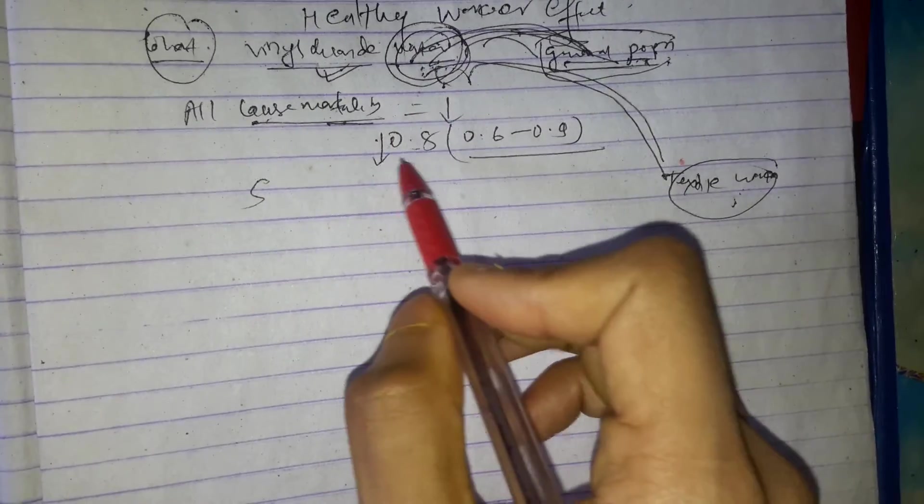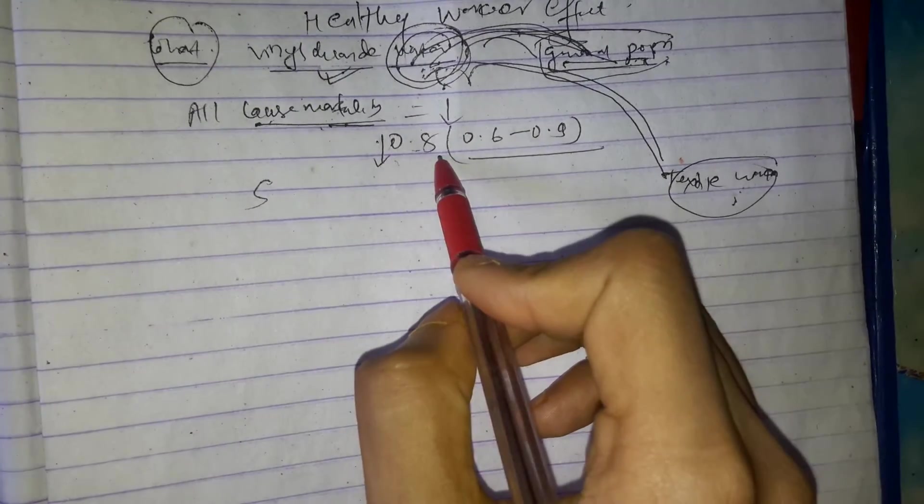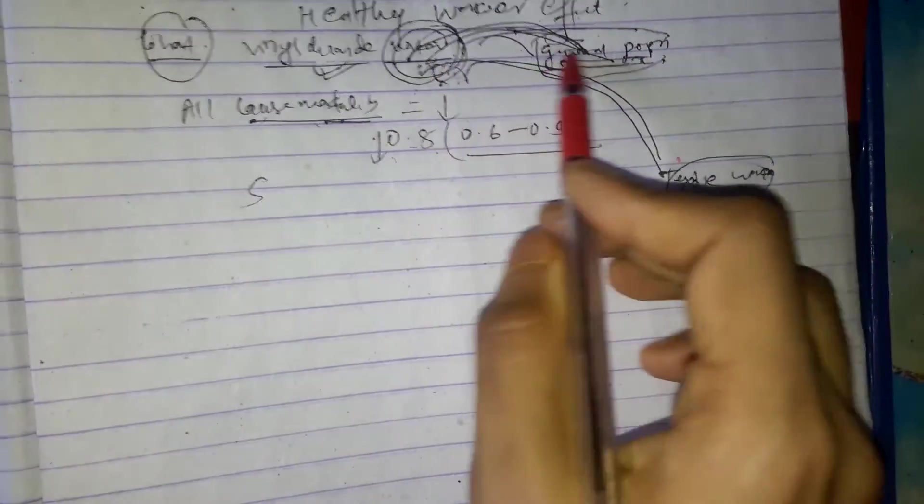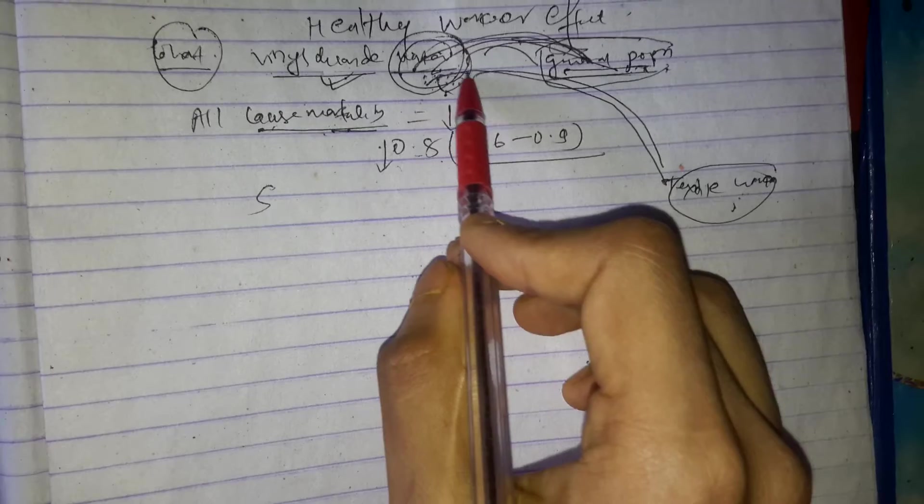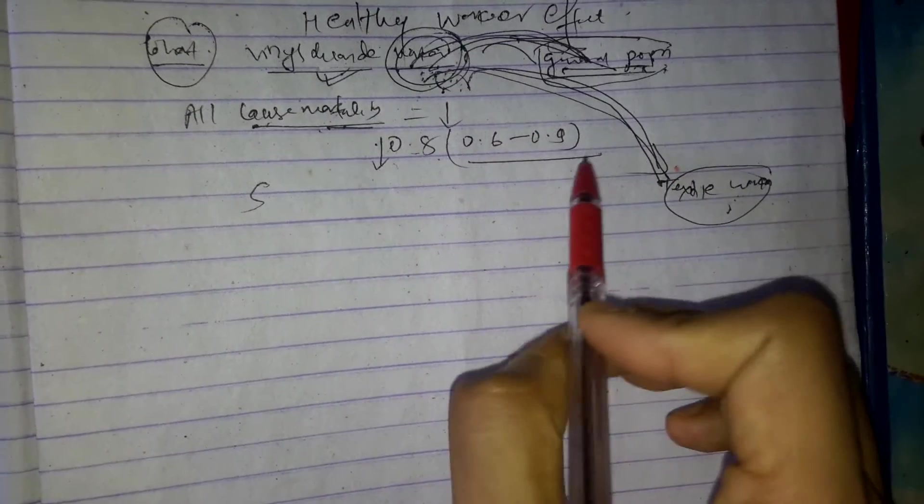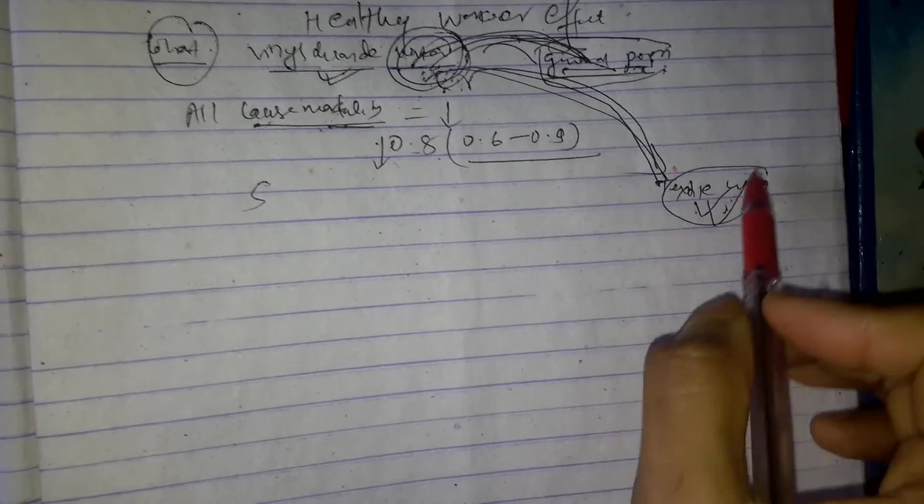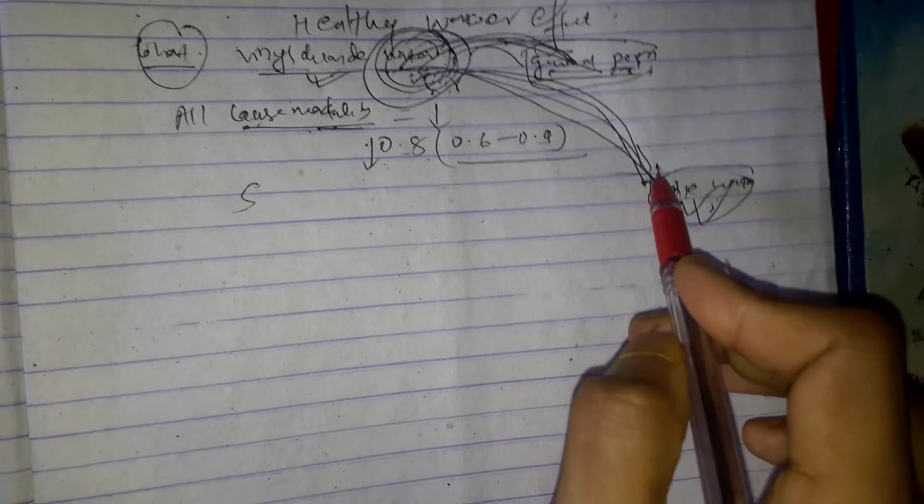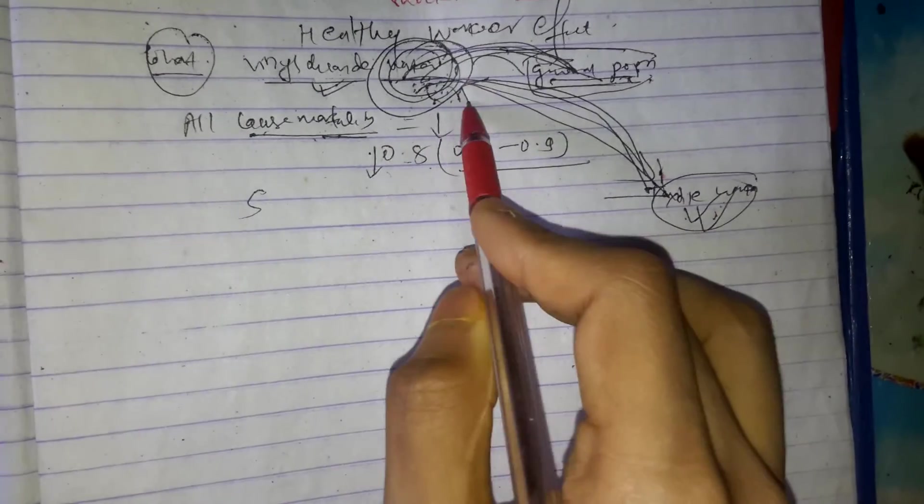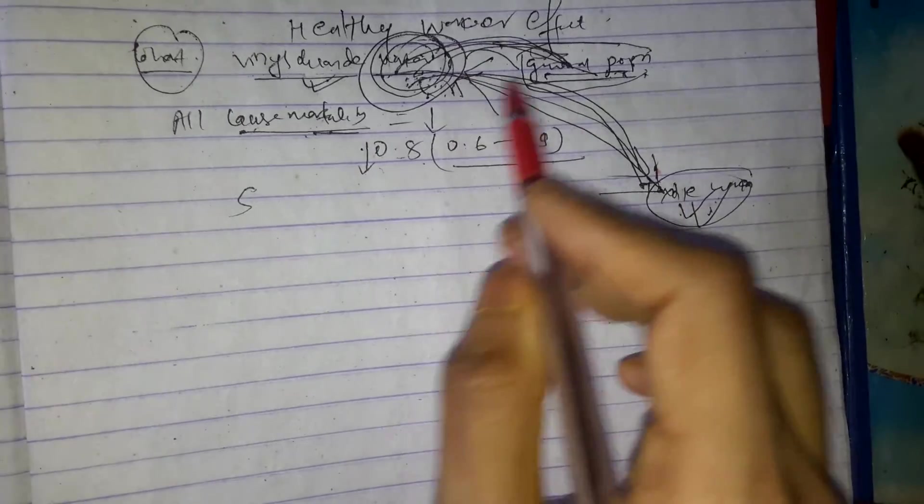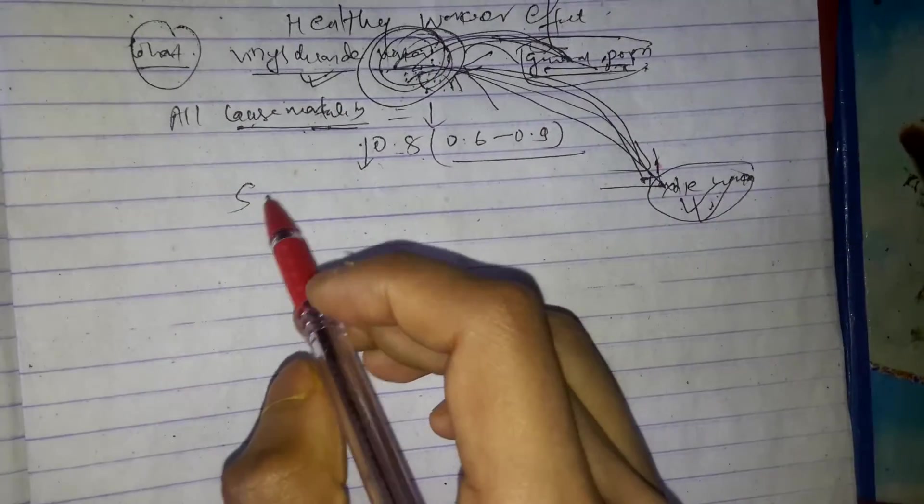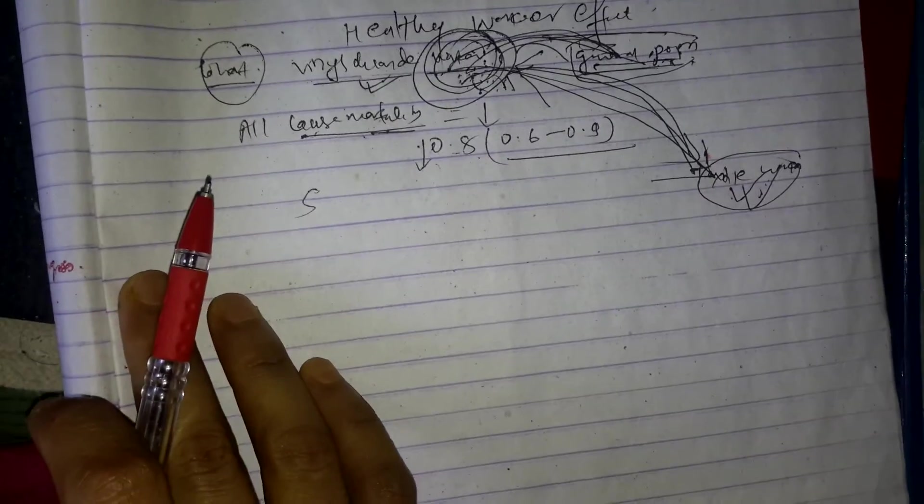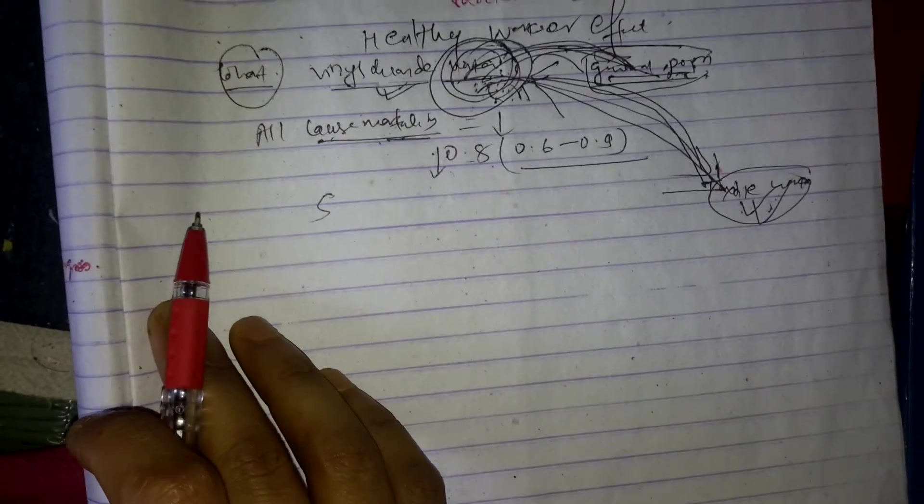That's why all cause mortality is found to be decreased. So that is a problem with this study design. Actually this should be compared with textile workers because here is also healthy individuals and here is also healthy individuals. So it would be fair if you compare this with this rather than comparing to general population. This is a selection bias.